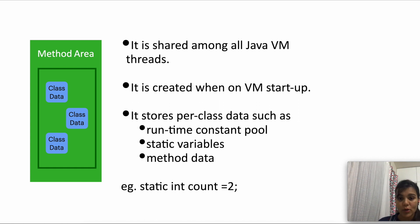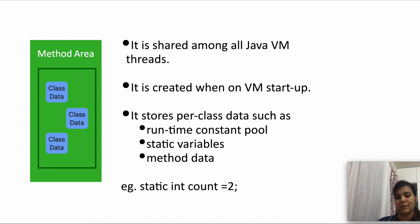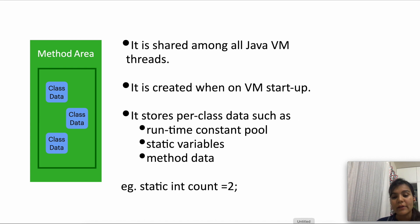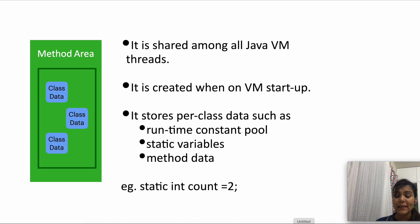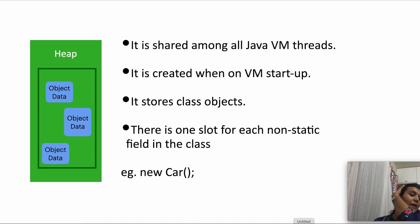The method area stores per-class data — every class will have its own class data in the method area. This includes a runtime constant pool, static variables, and method data. The runtime constant pool is the pool of constants for a class, like the name of the class, the fields, numeric literals, etc.